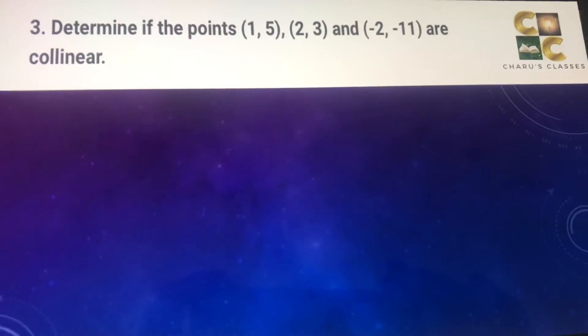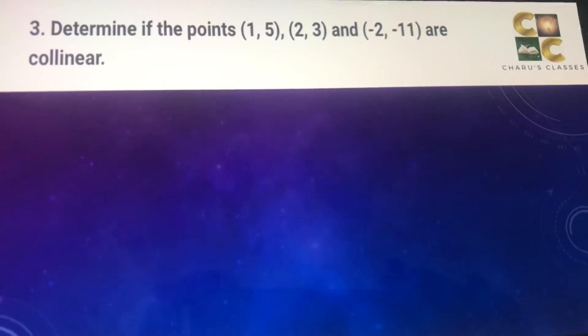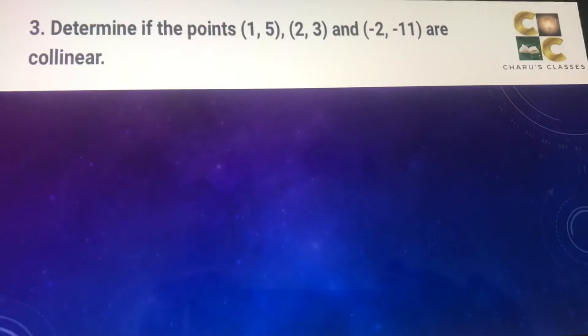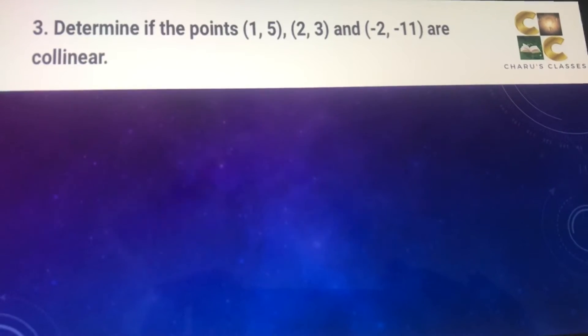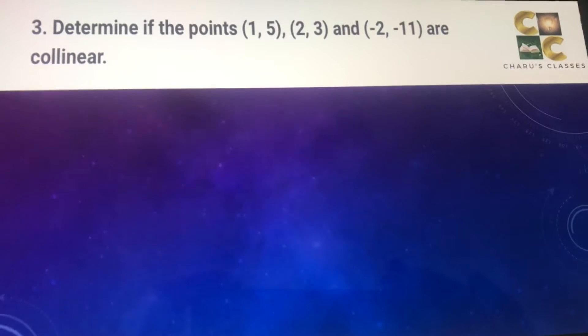Question number 3: Determine if the points (1, 5), (2, 3) and (-2, -11) are collinear. So let's call these points as A, B and C.